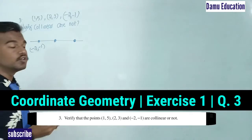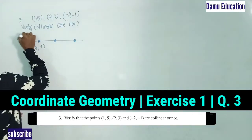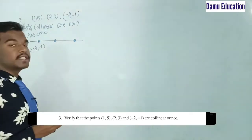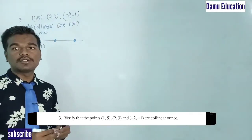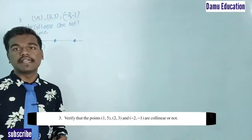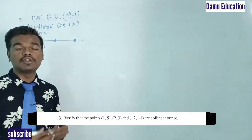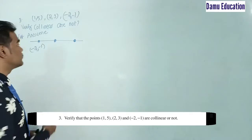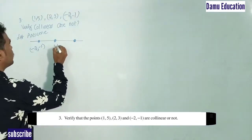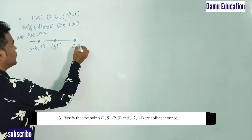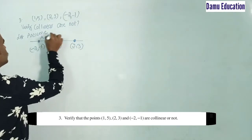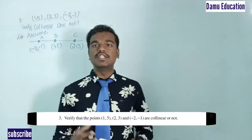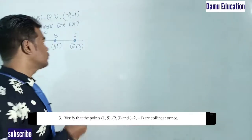We don't know yet whether they are collinear or not, so let's assume they are and verify. The three points we are working with are: A = (−2, −1), B = (1, 5), and C = (2, 3).